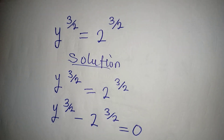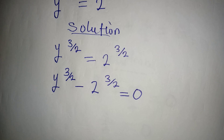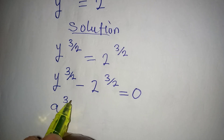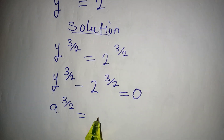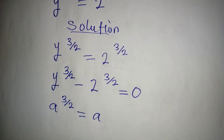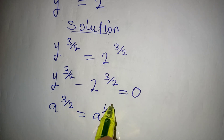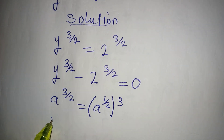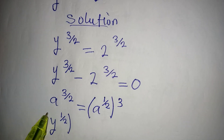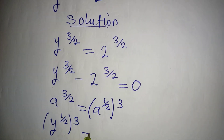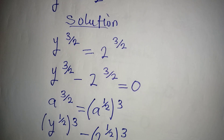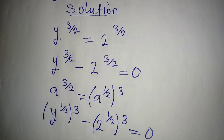What I've done is bring everything to the left. The next thing I would like to do is to rewrite the power. Remember, if you have a to the power of 3 over 2, it is the same thing as a to the power of 1 over 2, to the power of 3. I'm going to apply the same thing here: y to the power of 1 over 2, to the power of 3, minus 2 to the power of 1 over 2, to the power of 3, equal to 0.